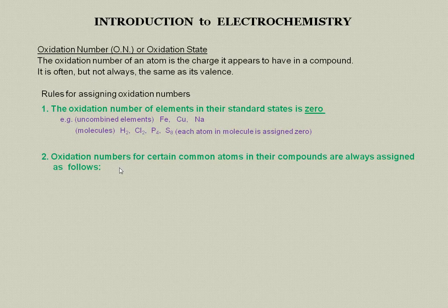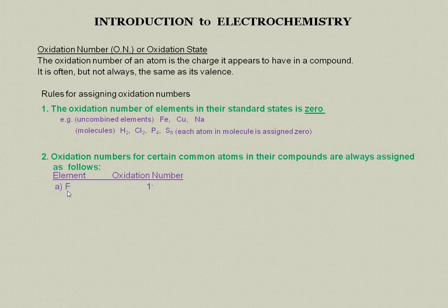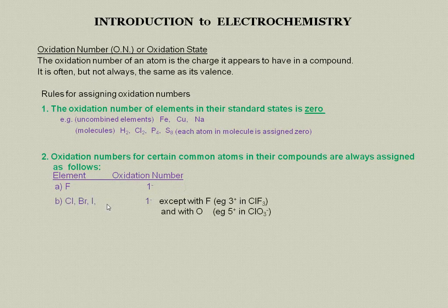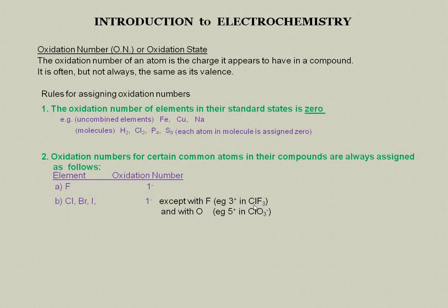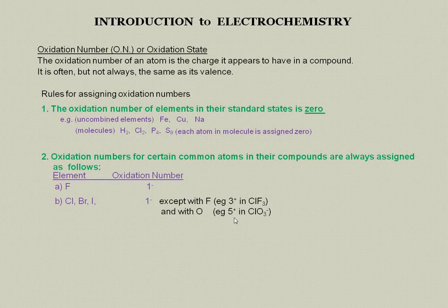The oxidation numbers for certain common atoms and their compounds are always assigned as follows. Fluorine, for example, the most electronegative element, is always minus one. The other halogens are also minus one, with these exceptions. If they happen to be combined with fluorine, fluorine being more electronegative than chlorine, will actually attract electrons away from chlorine to itself, leaving chlorine with a charge of plus three. Same thing here with oxygen. It's more electronegative than chlorine, so it will attract electrons to itself, leaving chlorine with a charge of plus five.